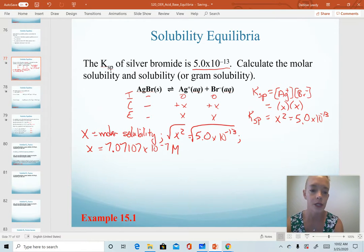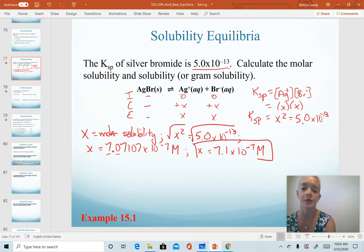And of course, remember that our x values in our ice table are molarities or concentrations. For a final answer, because our Ksp value only goes to 2 sig figs, if we're reporting this as a final answer, then we would round this as 7.1 times 10 to the minus 7 molarity. So that is our molar solubility.